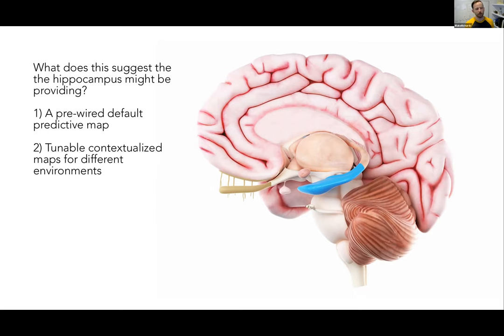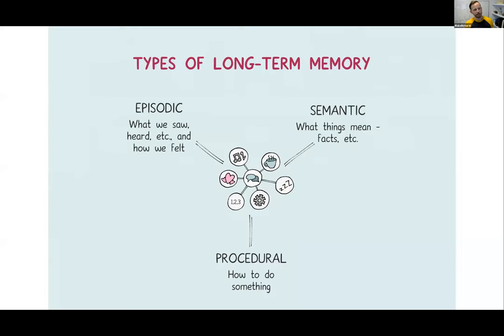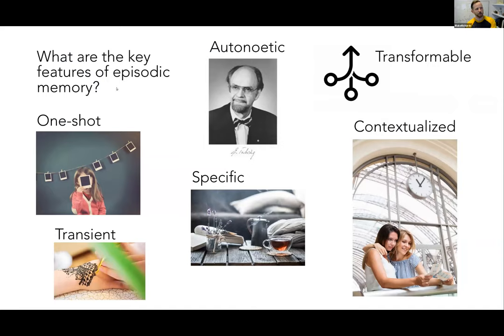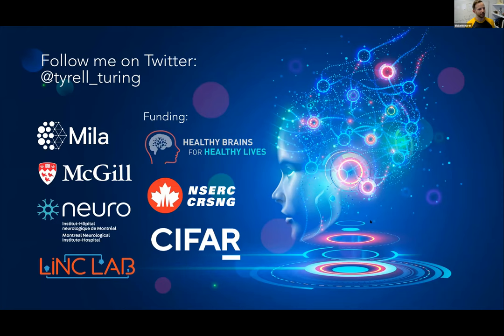This suggests that part of what the hippocampus provides is a pre-wired default predictive map with tunable contextualized maps — something we might want to give our AI. The path moving forward is to think about all the different things the hippocampus can do. Thinking about it with respect to episodic memory is important — the one-shot learning nature, the fact that memories are specific to particular contexts, and that they allow you to link up in an autonoetic way the values experienced in different contexts. We should also think about the circuitry. Thank you very much.